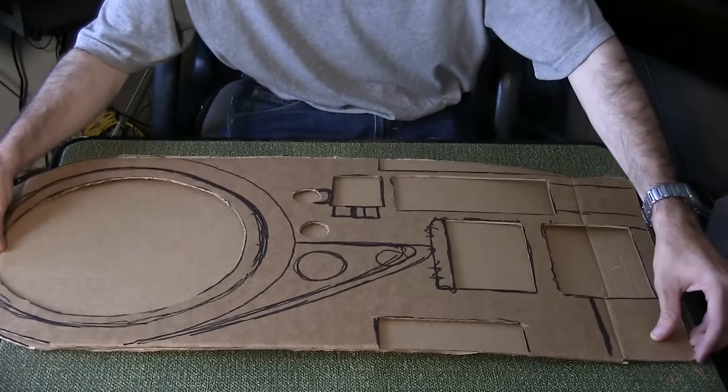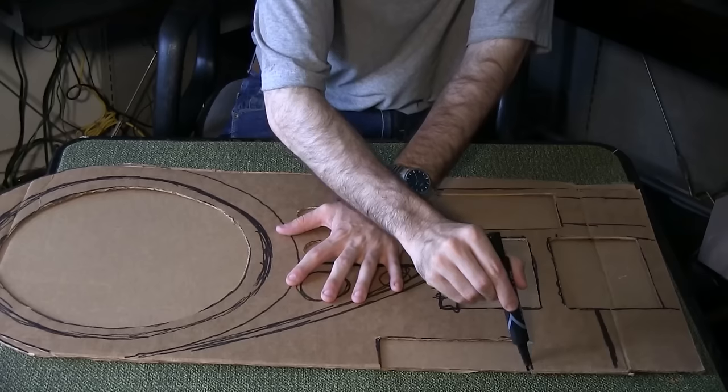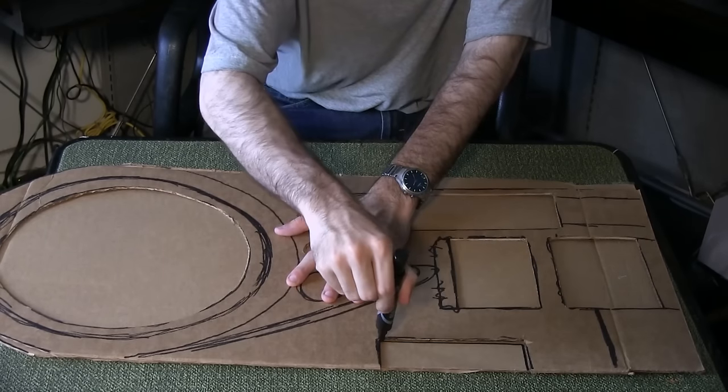Use your main template to draw and cut out a second one. Lay the template on top of this new one and trace all of the cutout areas, including the large circle.